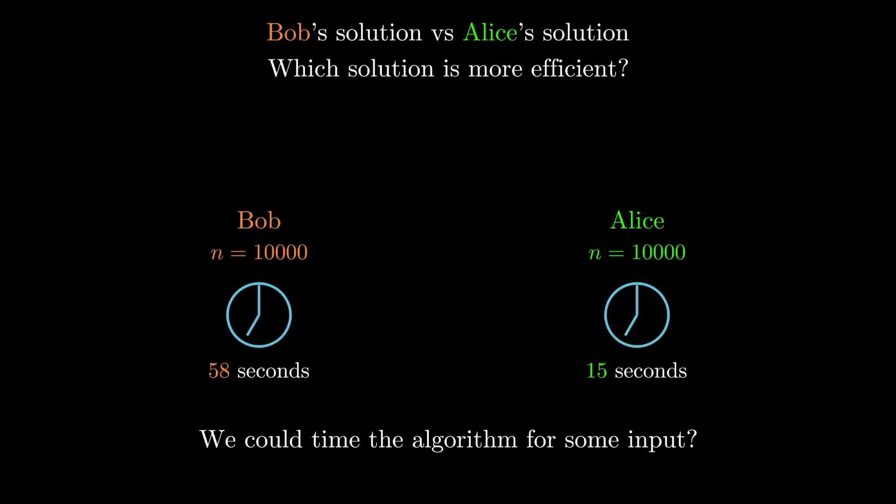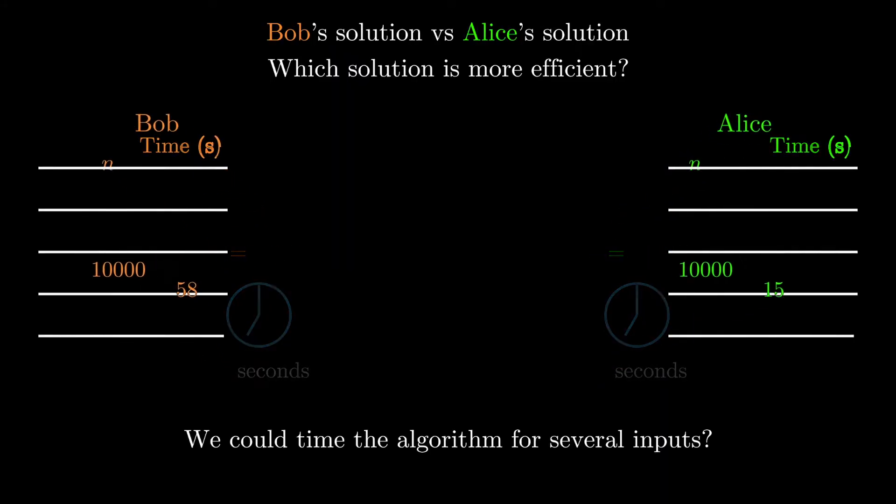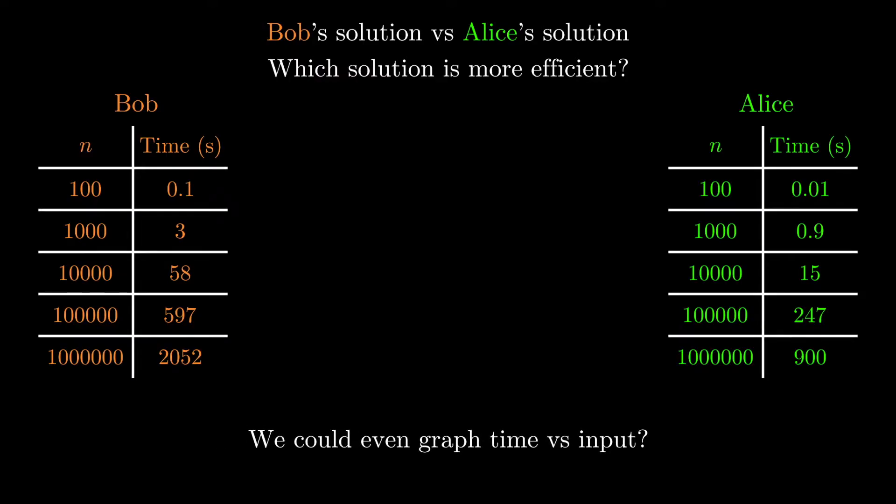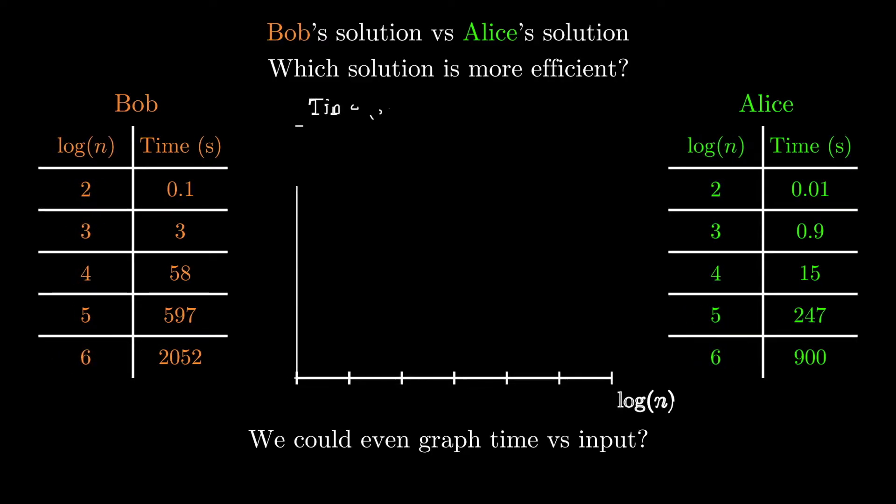We could be even more robust if we wish and tabulate the time measurements for various inputs, and we could then compare the two algorithms on a variety of data points. Additionally, if we really wanted to go all out with comparison, we could put these values on a graph to see approximately how the time grows as a function of the input. One note about graphing is that it's easier to put our x-axis on a logarithmic scale for visualization.